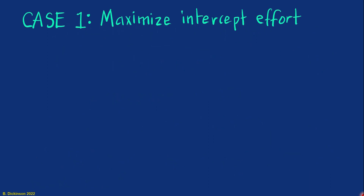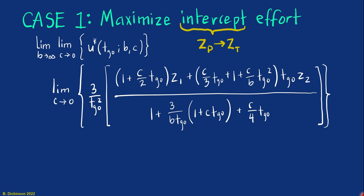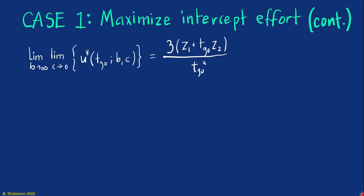Now let's look at the case where we maximize intercept effort. Intercept means that Z1 approaches zero, or pursuer and target collide. Mathematically, we want to let the limit of the B term in the terminal cost matrix go to infinity while the C term goes to zero. Taking the limit of C going to zero and then B going to infinity, the result is immediately identifiable as zero effort miss proportional navigation.